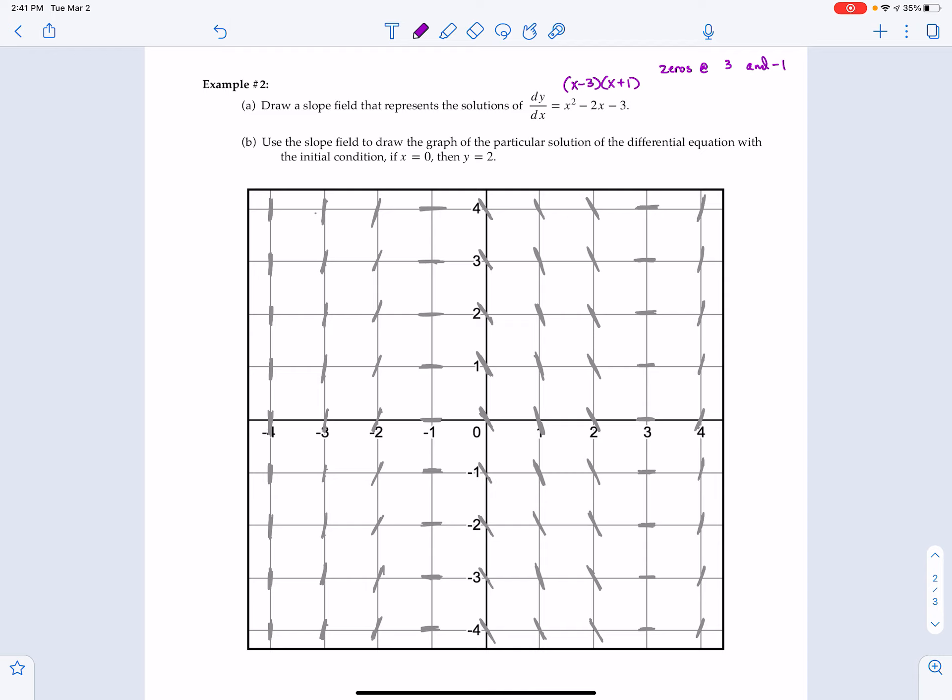It says, use the slope field to draw the graph of the particular solution of the differential equation with the initial condition, if x equals 0, then y equals 2. That is another way to say, start at 0, 2 and follow the path. So we are going to go up to the left. We know that it flattens out, and then it starts taking off severely, steeply. And again, this isn't a perfect science. We're not going to come out with some artistically beautiful answer. But it's best to kind of take nice, short strokes here.